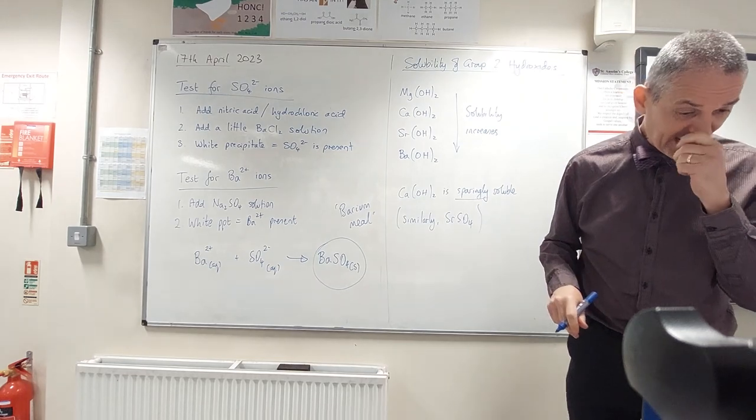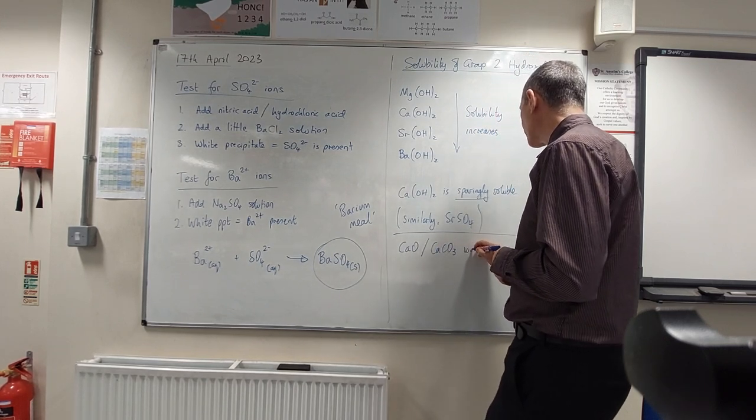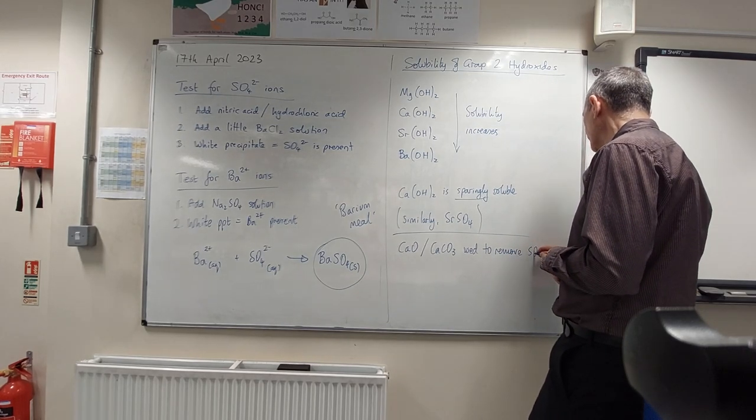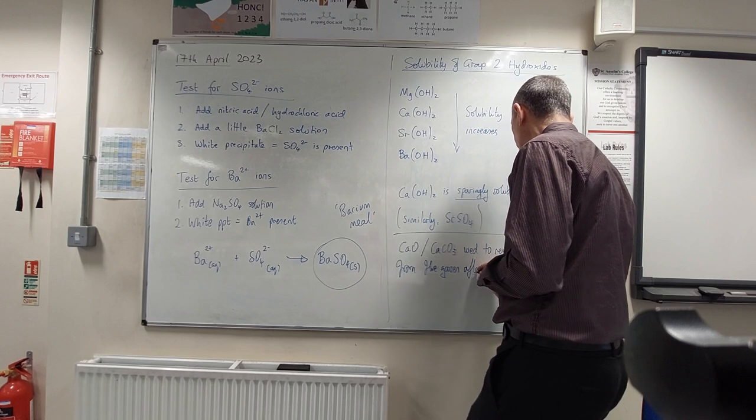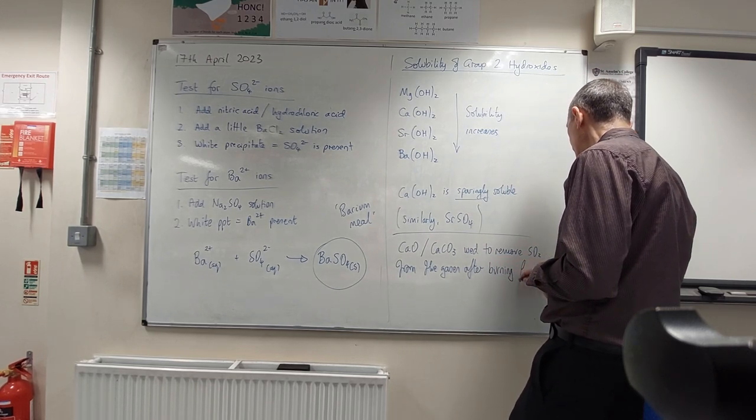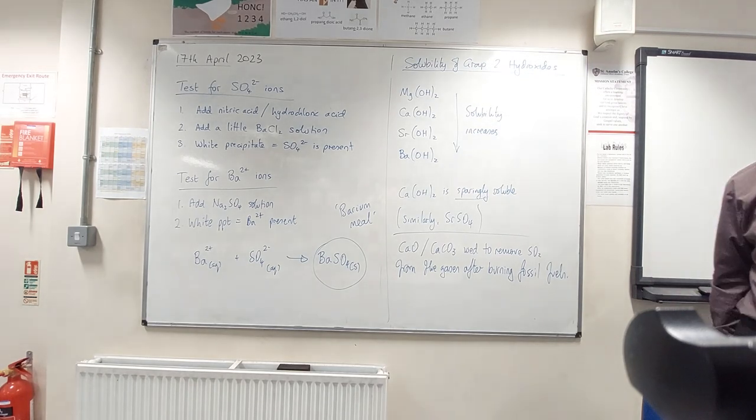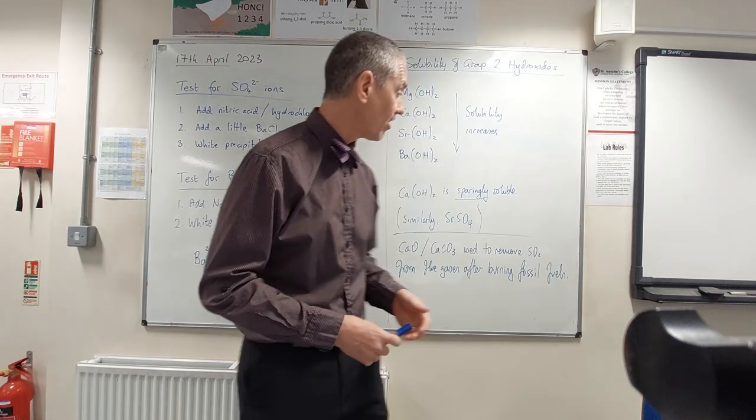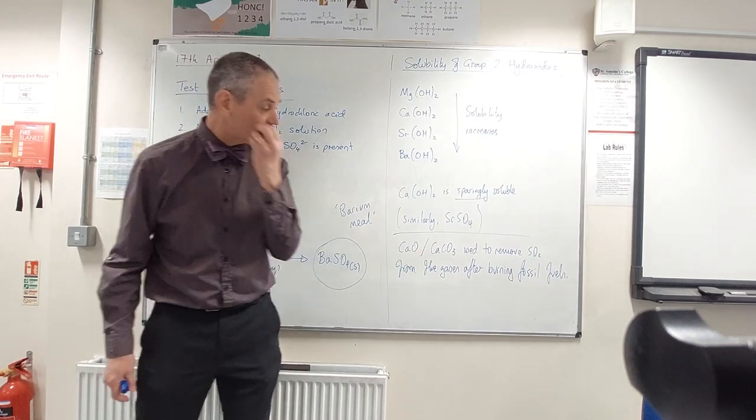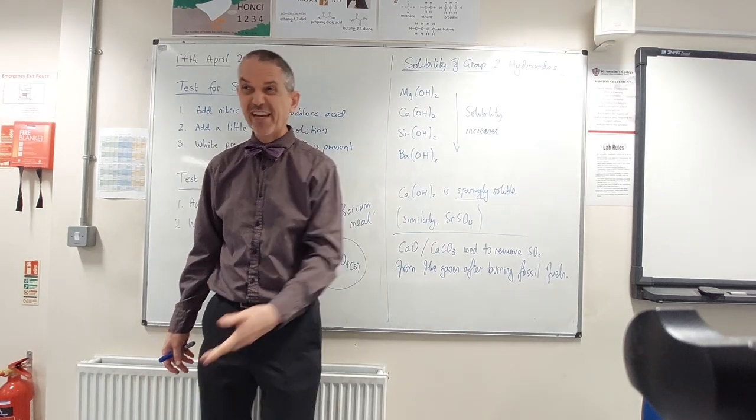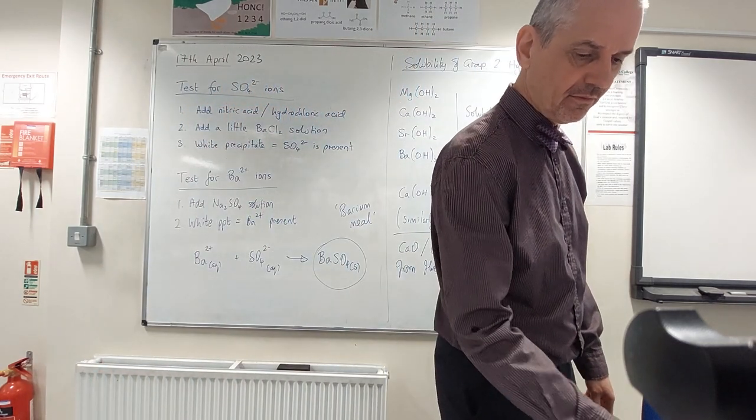One more random fact. Calcium oxide or calcium carbonate are used to remove sulfur dioxide from flue gases after burning fossil fuels. Why don't we like sulfur dioxide? Acid rain. Acid rain, thank you very much. Yeah, so sulfur dioxide goes out into the atmosphere, dissolves in rainwater, causes acid rain, kills crops, trees, fish, etc. So we don't like that. So they pass the gases through either a suspension of calcium oxide or calcium carbonate. And the sulfur dioxide reacts with that. No sulfur dioxide in the atmosphere, no acid rain. Okay. That's it.